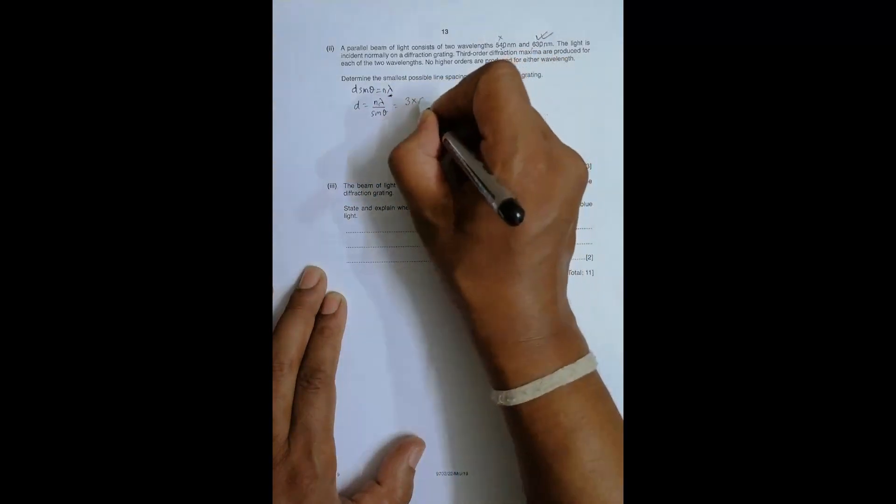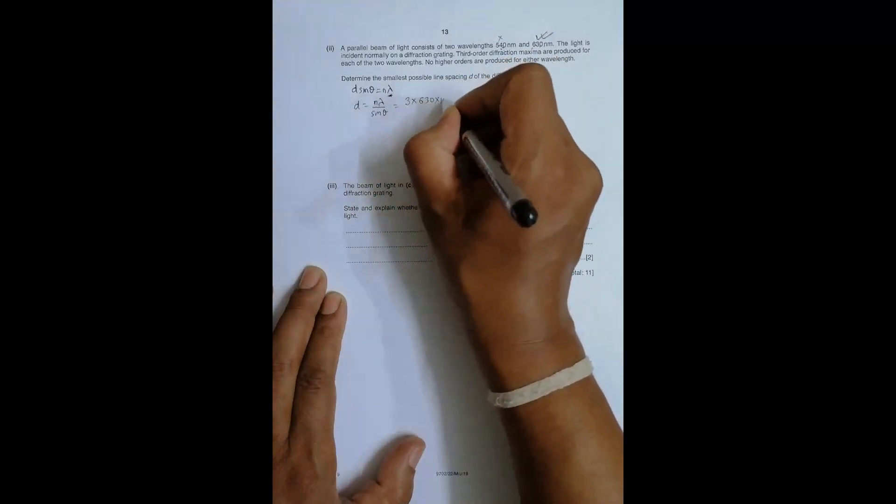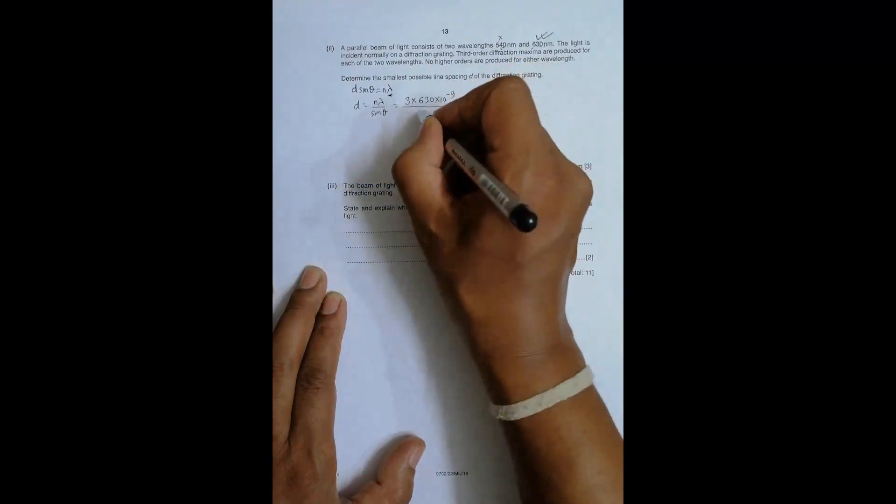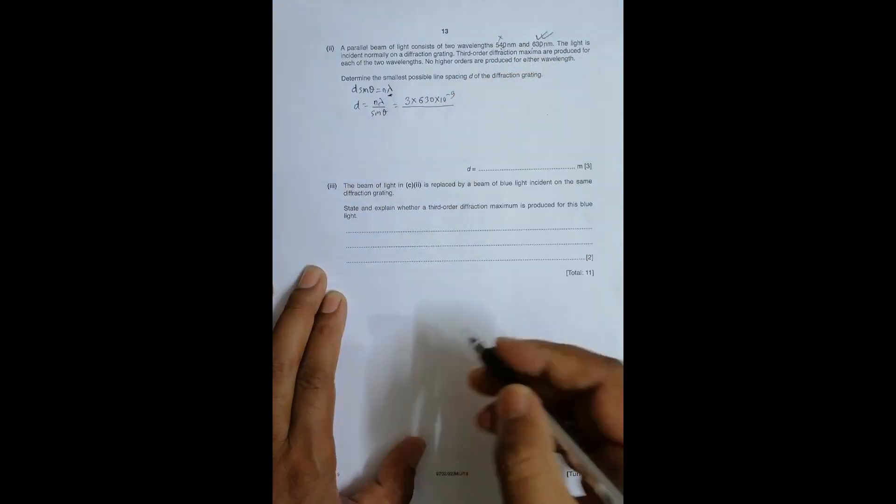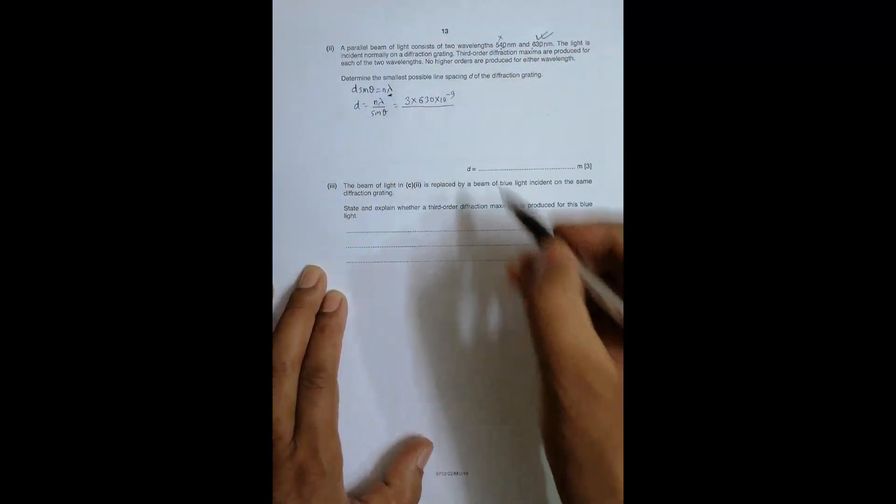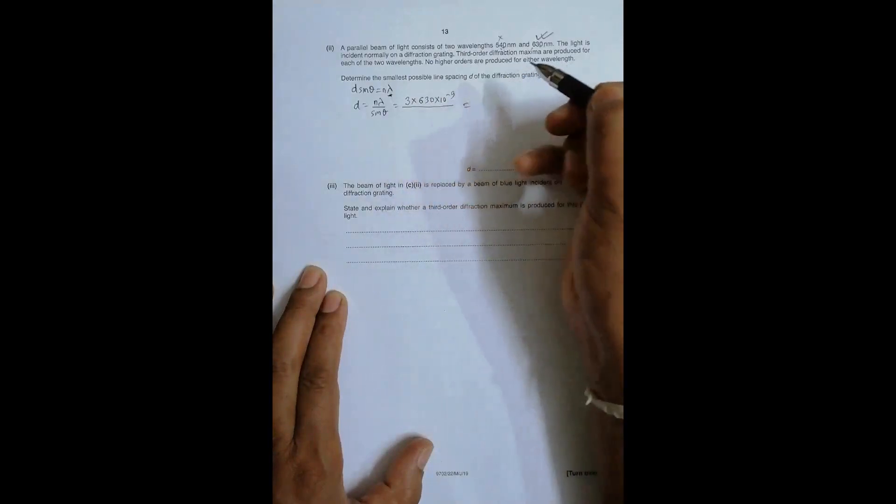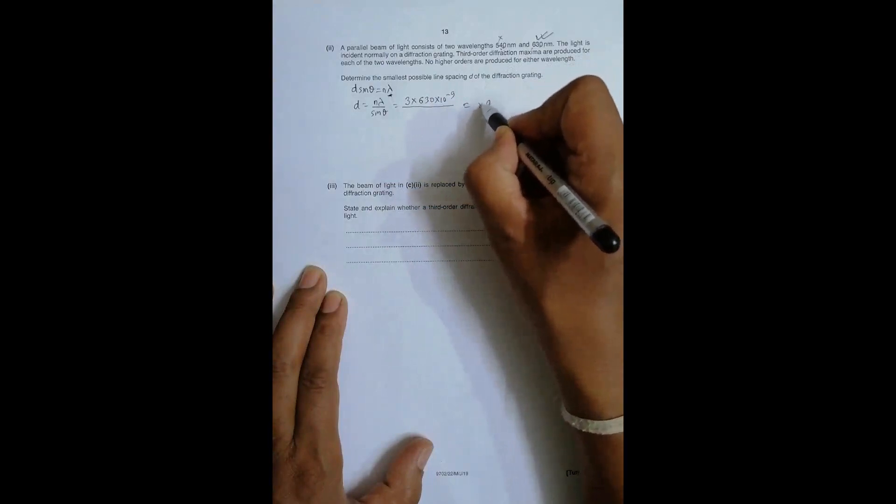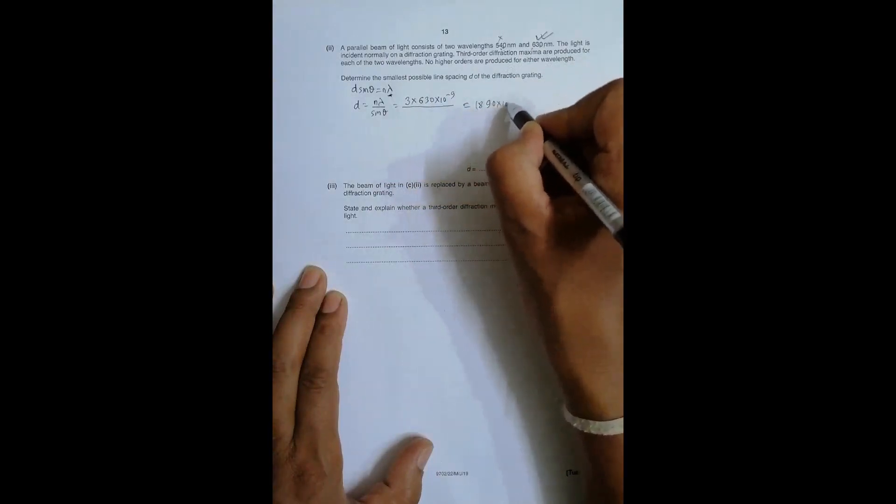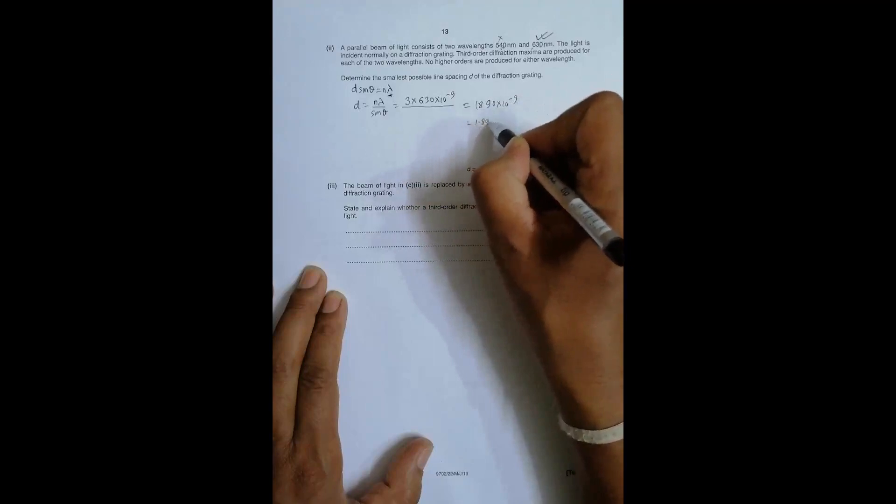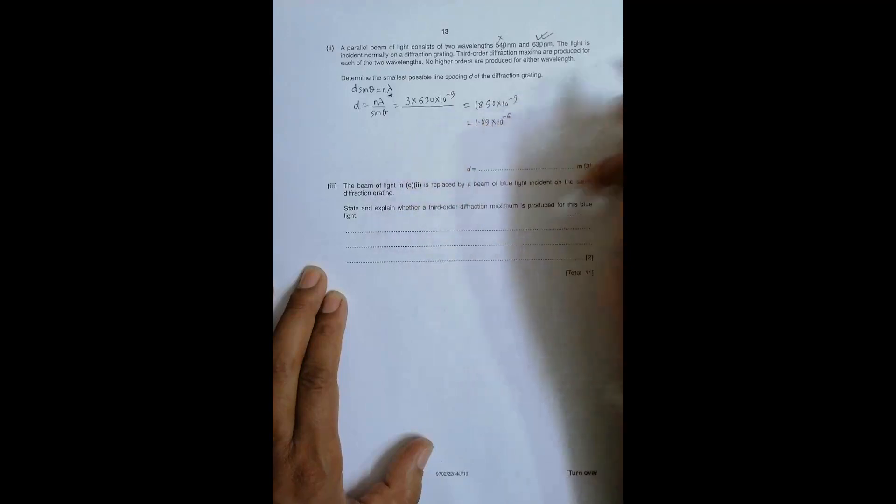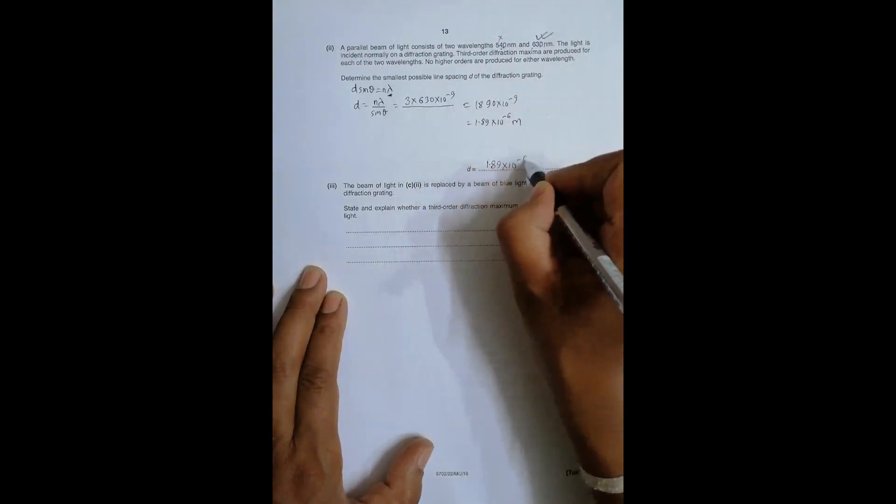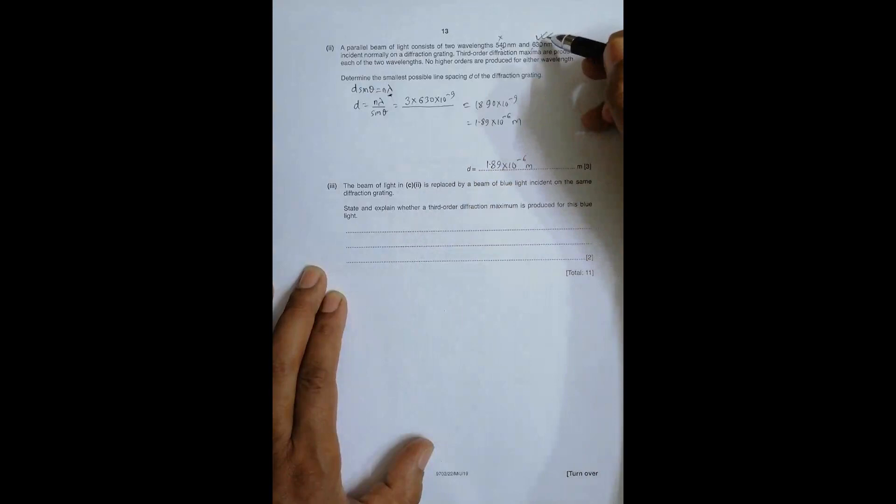Now what I can do is, we have to find the smallest line spacing, so D equals n λ divided by sin θ. Sin θ equals, n is 3 here, and lambda equals 630 times 10^-9. Then sin θ equals sin 90 degrees which is 1. So the value of D should equal 3 times 630 equals 1890 times 10^-9, which should be equal to 1.89 times 10^-6 meters.